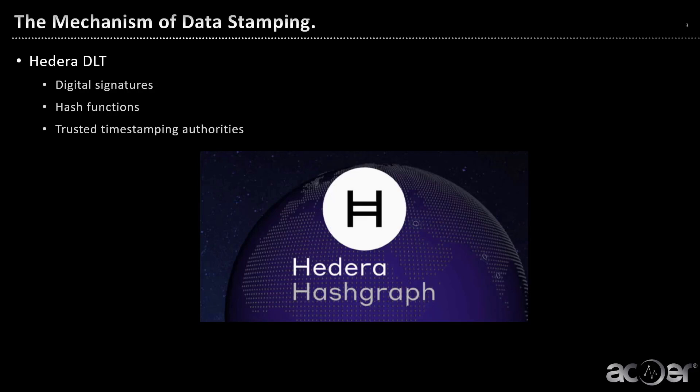Picture this: a digital signature acts like a unique fingerprint for your data, ensuring its authenticity remains uncompromised. Hash functions create a fixed-size representation of your data, adding to the security. Then comes the trusted timestamping authorities, guaranteeing the accuracy of the timestamp.